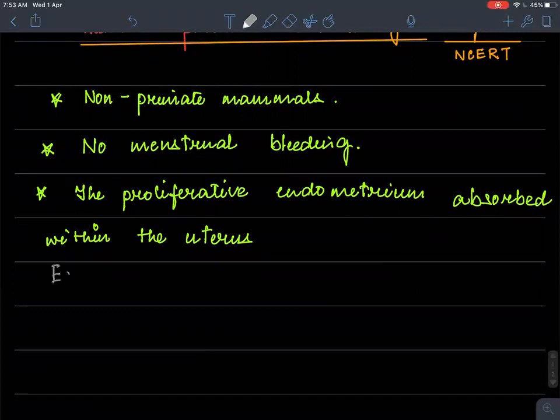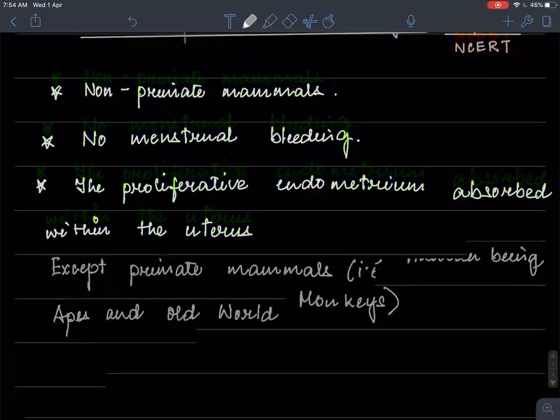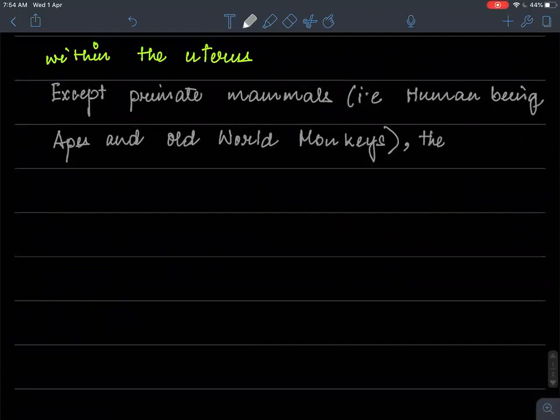So except, we can say here, except primate mammals, that is, human being, apes, and old world monkeys. This cycle, that is, the estrus cycle is found in all mammals.